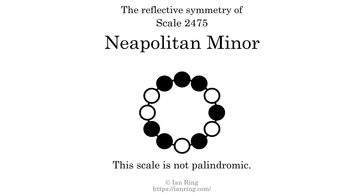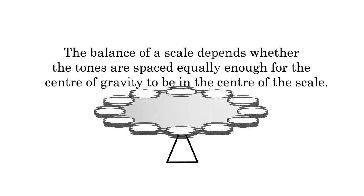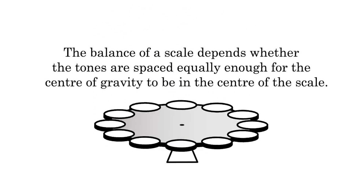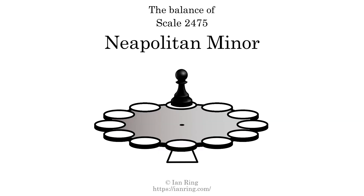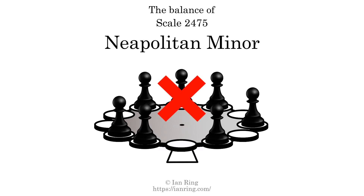This scale has no reflective symmetry. This scale has a different pattern of intervals ascending and descending, so it is not palindromic. This scale has no ridge tones. The balance of a scale depends on whether the tones are spaced equally enough for the center of gravity to be in the center of the scale. This scale is not balanced.